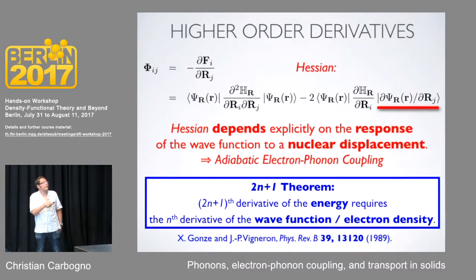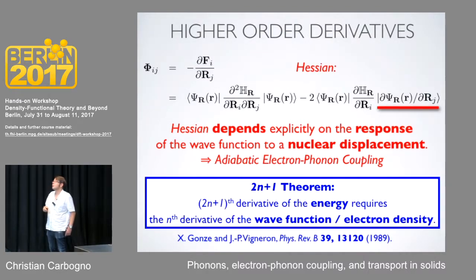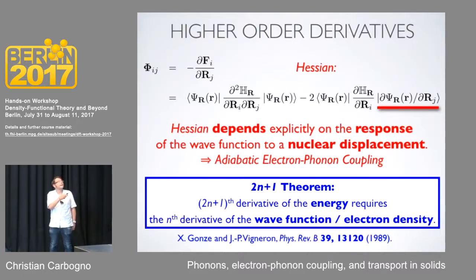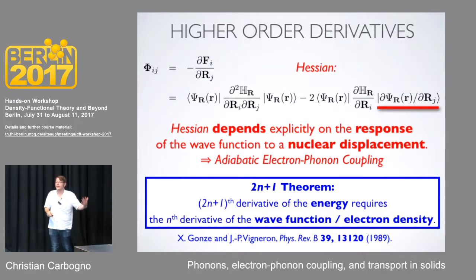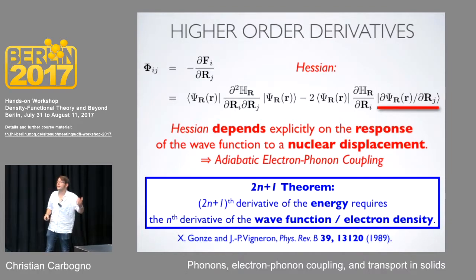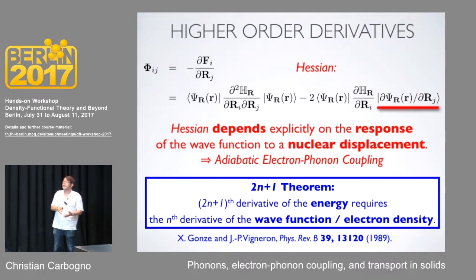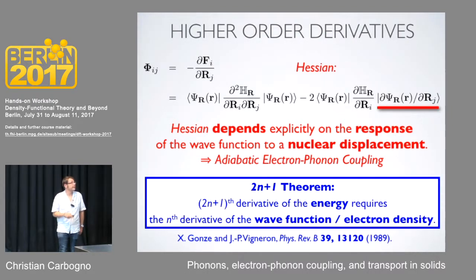This kind of argument can be generalized in the 2n+1 theorem: if you require the (2n+1)-th derivative of the energy, then you need the n-th derivative of the wave function, electron density, or the n-th response. So the first derivative of the density will give you the Hessian and even the third-order force constants. If you want to go beyond that, you need higher derivatives of your electron density.